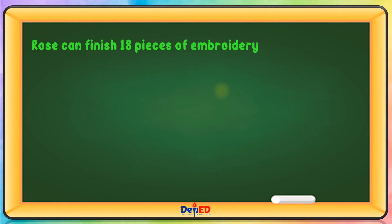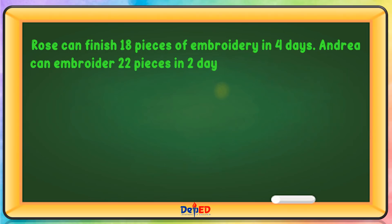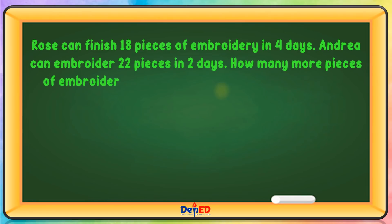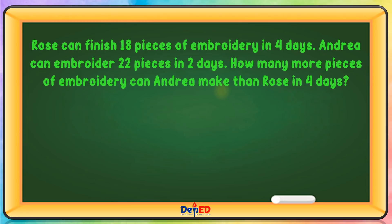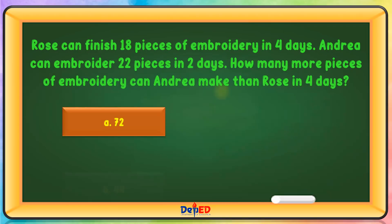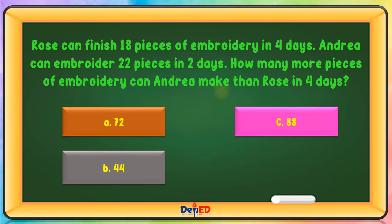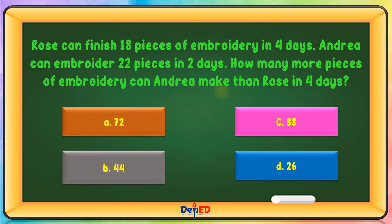Rose can finish 18 pieces of embroidery in 4 days. Andrea can embroider 22 pieces in 2 days. How many more pieces of embroidery can Andrea make than Rose in 4 days? A. 72  B. 44  C. 88  D. 26. The correct answer is D.